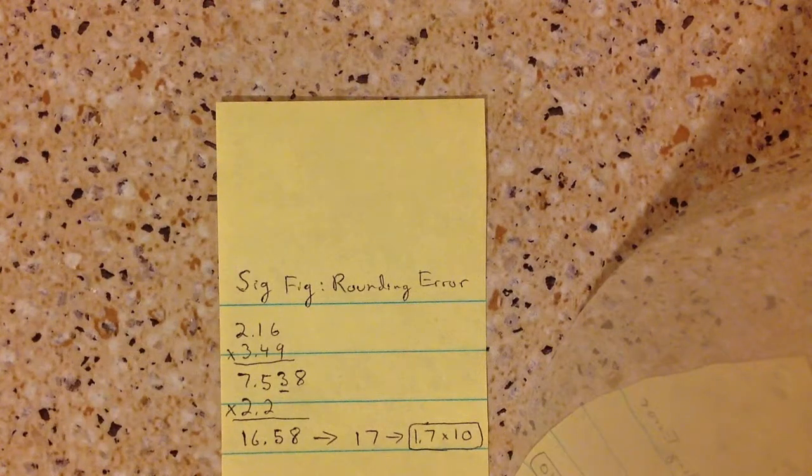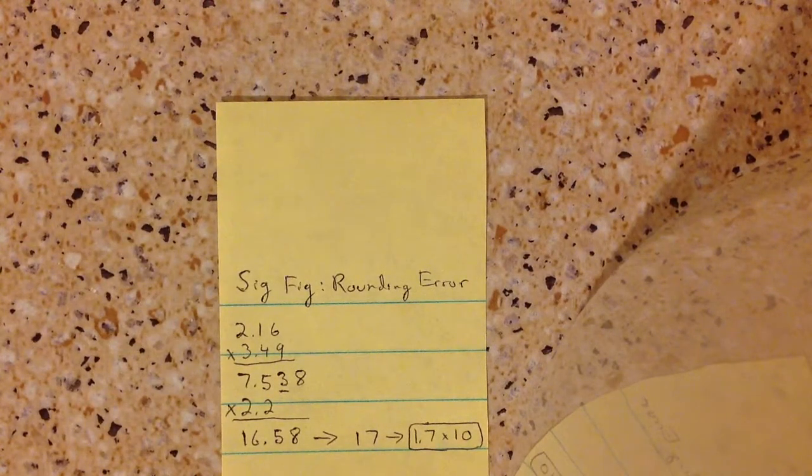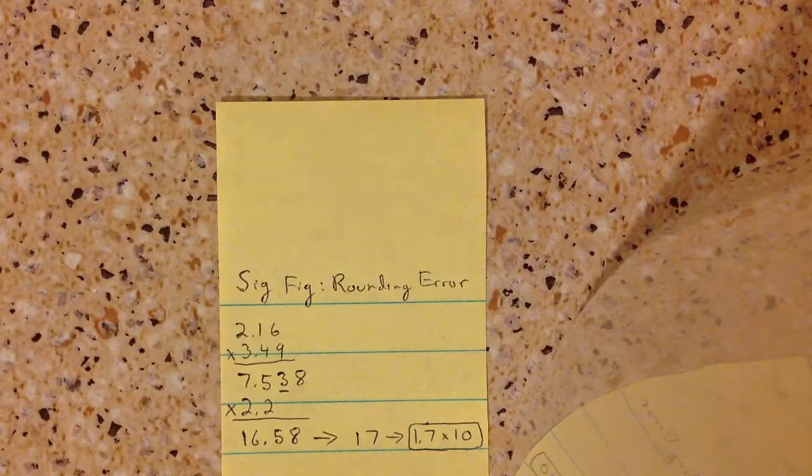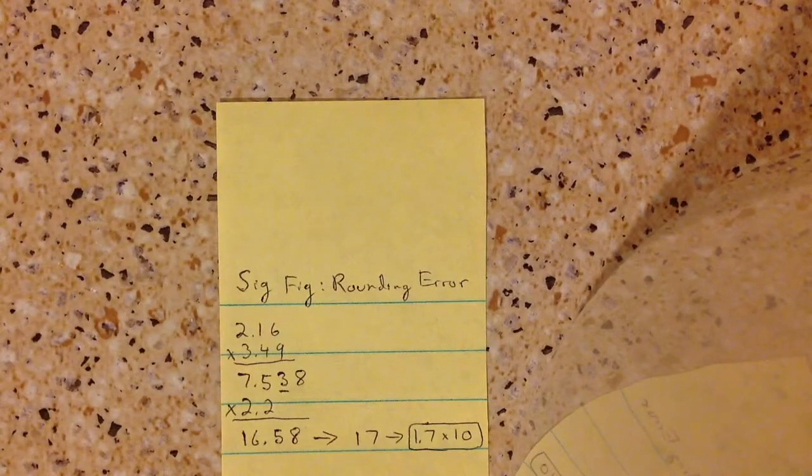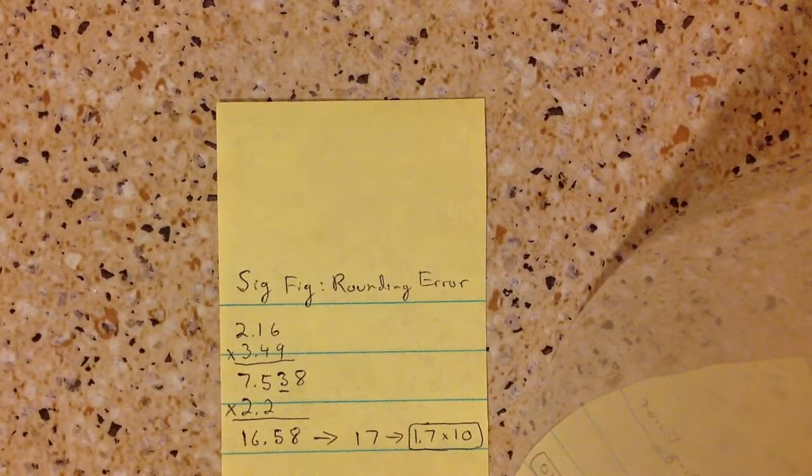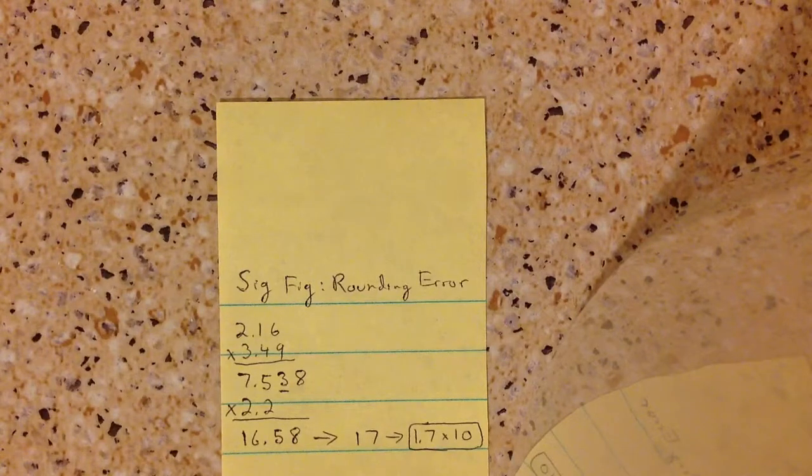Alright, so for sig figs, when you do multi-step problems, something to take into account is rounding error. And so this is how you correct that.